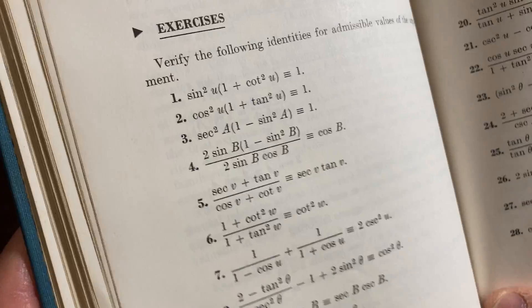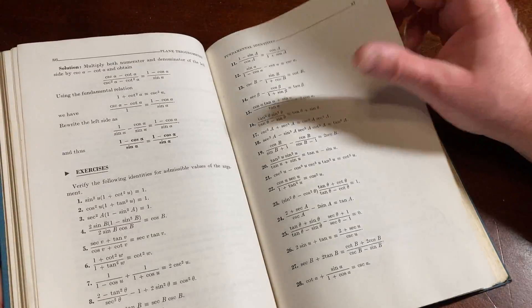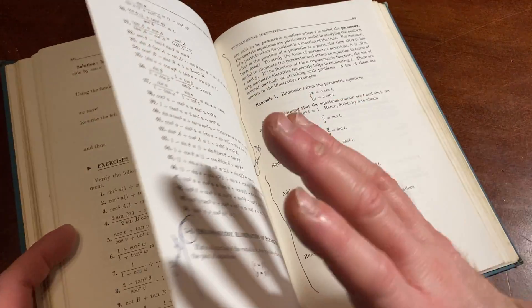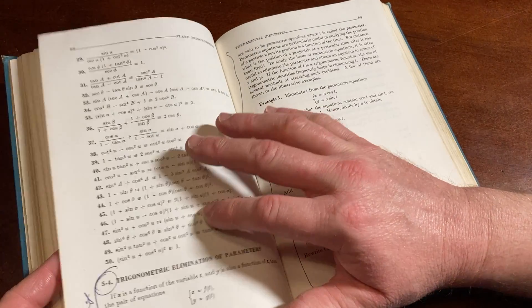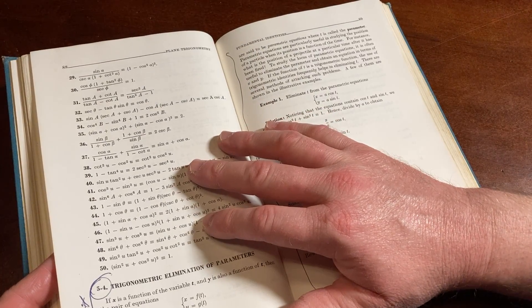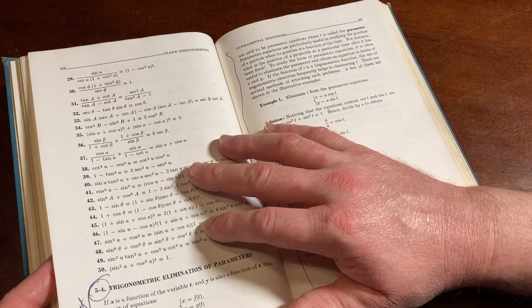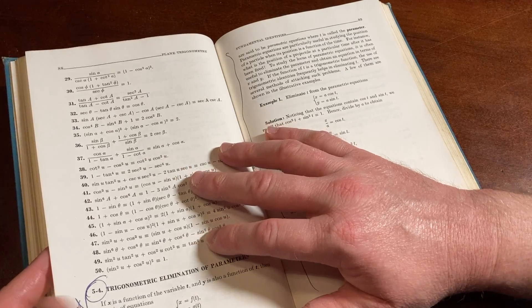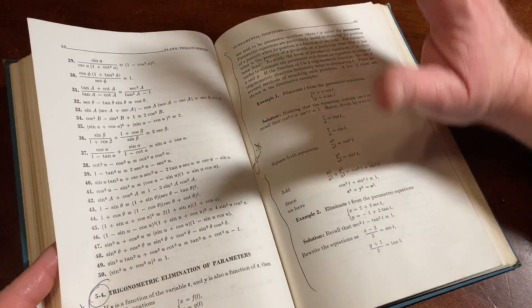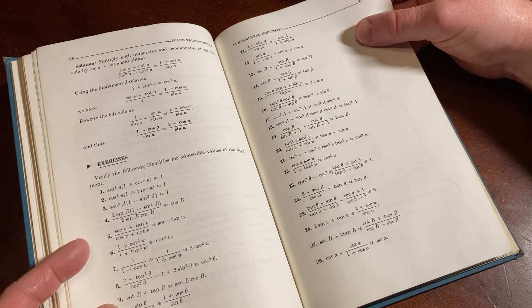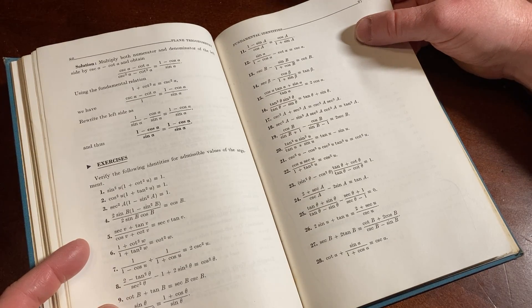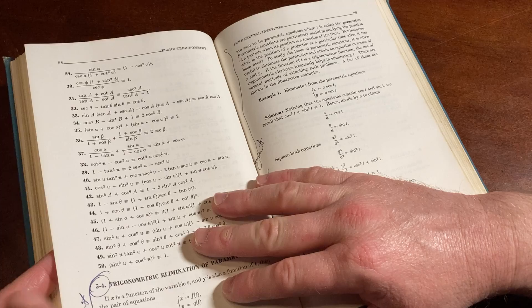One plus tan squared actually is secant squared. So that's cosine squared times secant squared, which is cosine squared times one over cosine squared, which is one. I don't know if that's how they want you to do it, but that's one way to do it. The trick with these, when all else fails, just go to sine and cosine and you might find some horrible, really long way to do it, but at least you'll be able to do it.